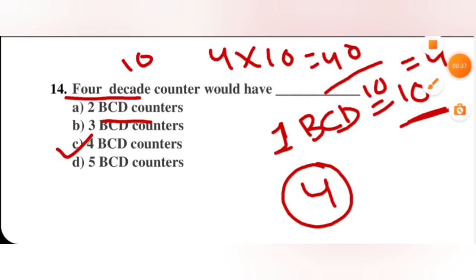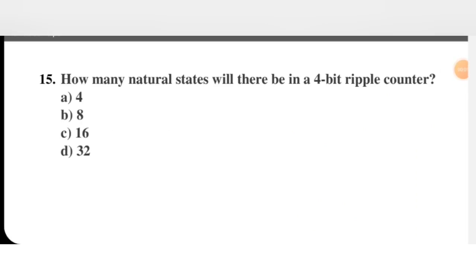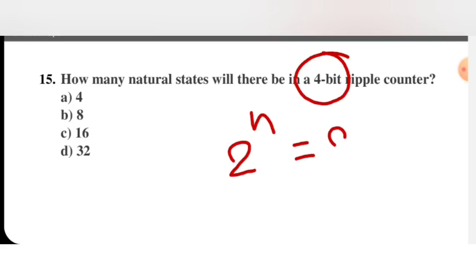Next question: how many natural states will there be in a 4-bit ripple counter? Natural states means we are not forcibly limiting the counter — it counts all possible states. With 4 flip-flops, the number of states is 2 raised to power n, where n equals 4. So 2 raised to power 4 equals 16. The right option is C.